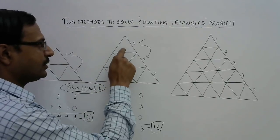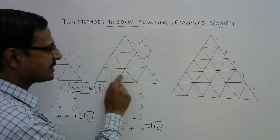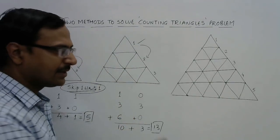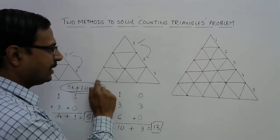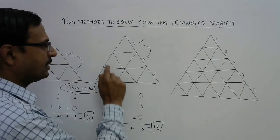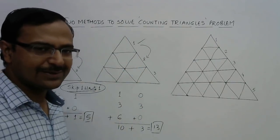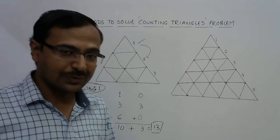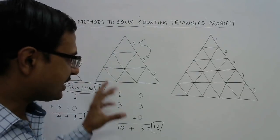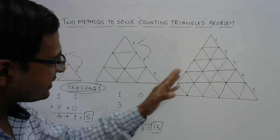So there are 13 triangles in this figure. Now if you want to count it, you have 1, 2, 3, 4, 5, 6, 7, 8, 9 small triangles, then 10, 11, 12 and the bigger one 13. So there are 13 triangles. So verified by the traditional approach.